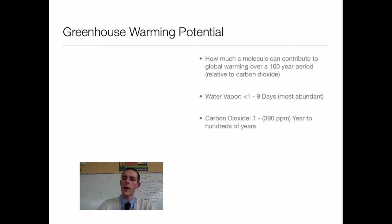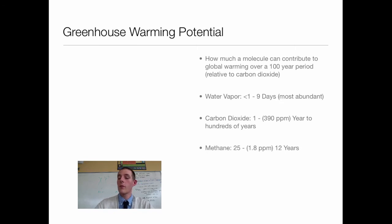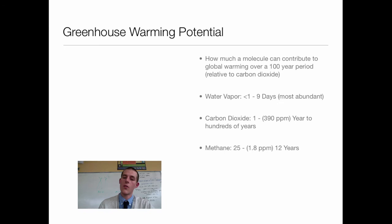Carbon dioxide is the one you always hear about. Because it's the reference gas, it has a warming potential of one. Its abundance in the atmosphere right now is somewhere above 390 parts per million — meaning in a million molecules, 390 would be carbon dioxide. It can last in the atmosphere from a year to hundreds of years. Next, making a significant jump, is methane, which is 25 times more potent than carbon dioxide. It can hang out in the atmosphere for 12 years. Its current concentration is 1.8 parts per million. Because its concentration is so much lower, it does not contribute to global warming as much as carbon dioxide, though it is a stronger greenhouse gas.